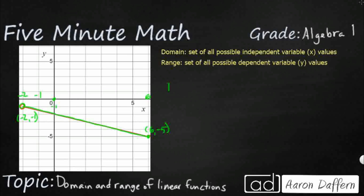So if we wanted to use inequalities, I'm going to go left to right — small to big for x. Since the left endpoint has an open circle, x is going to be greater than negative 2, because we are not including negative 2 in the domain set. Going to the right, it's a closed circle, so we include 6. So x is greater than negative 2 and less than or equal to 6.